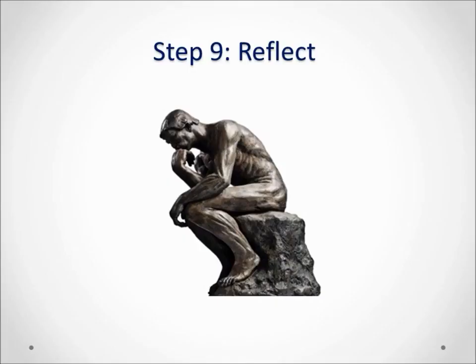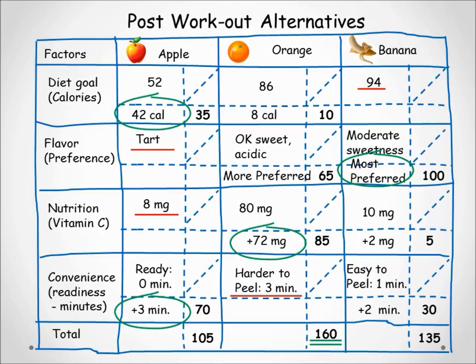Back to the CBA process: it is time to reflect and reconsider the scoring, especially when the total scores are so close that you may need to sleep on it. After reflecting, make any necessary changes. In our example no adjustments were required, so the orange remained with the highest score. If money is not an issue, you would end the CBA session here and select the alternative with the highest score — in this case, the orange.